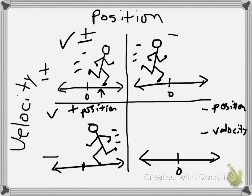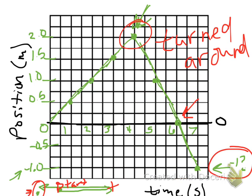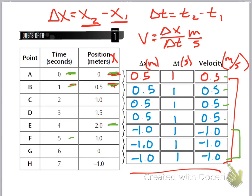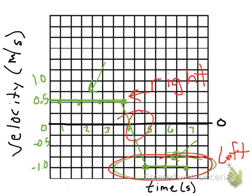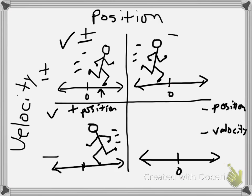I hope you don't have too many questions about positive and negative position versus positive and negative velocity. If you do, you're more than welcome to ask anyone. Take a look back at the data table as well as the graph and see if you can figure out what point goes with what point. I'll make this video available in case you want to watch it again.